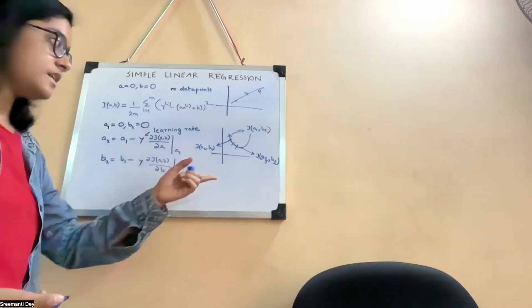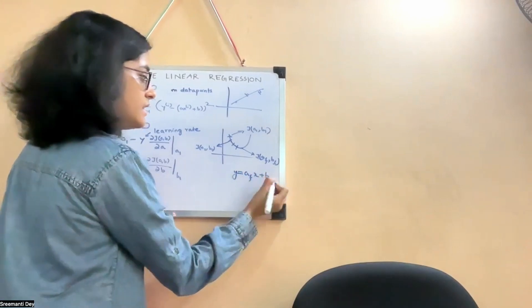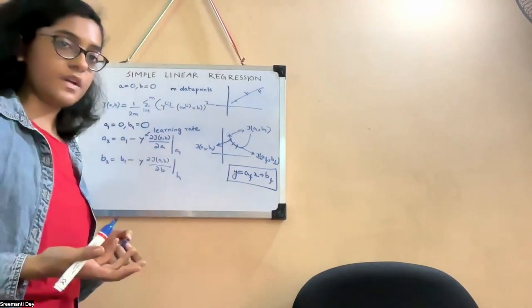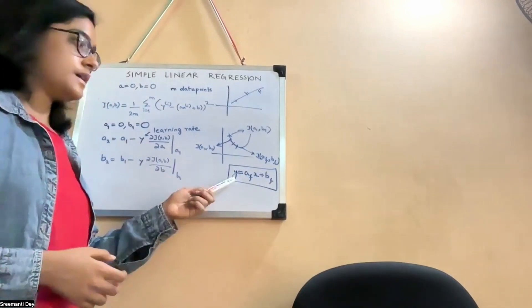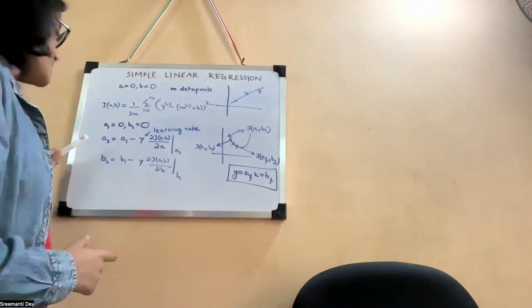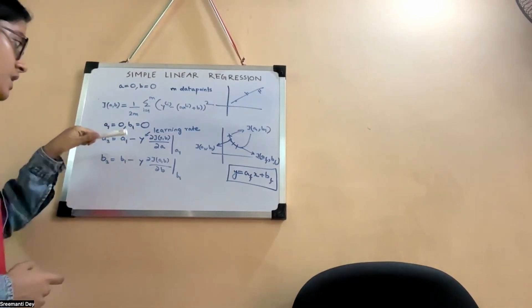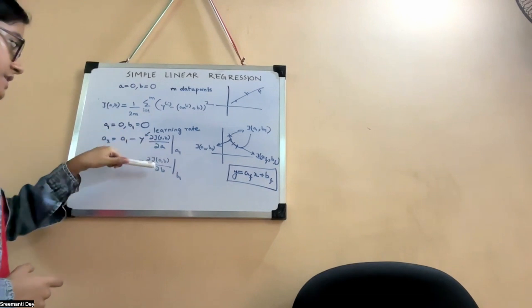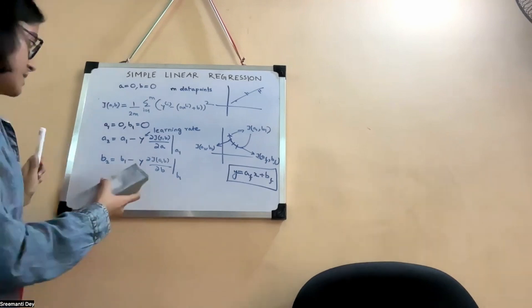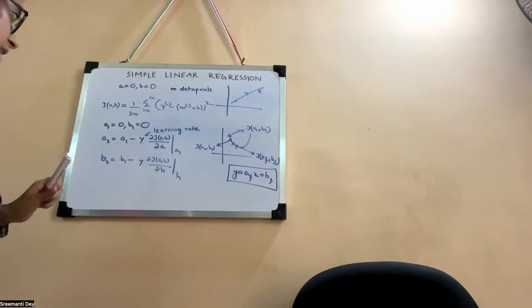Here we are slowly step by step. So this one would be J(A2, B2). This is J(A1, B1). And whenever we get near this, it would be J(A final, B final). And this is what we're looking for: A final, B final. Once we have the A final, B final, we would be able to construct this: A final X plus B final. And that is our line. Then we can just put in any value of X. Our test variables would be putting in any value of X, and we would be getting the Y value, which is our target.